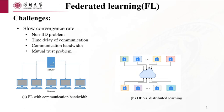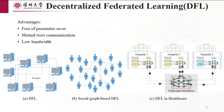A reasonable solution is to employ distributed training using decentralized devices. Therefore, the following introduces a decentralized federated learning solution. As shown in the figure, this approach eliminates the need for a centralized server and allows agents to exchange model parameters only with their neighboring agents. By doing so, the distributed framework provides a more scalable and efficient solution. DFL can be applied in various scenarios such as social networks (Figure B), the healthcare sector (Figure C), and others.